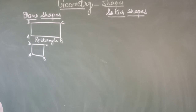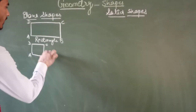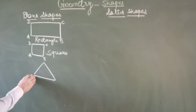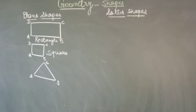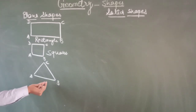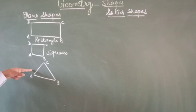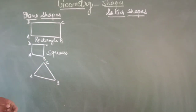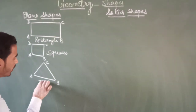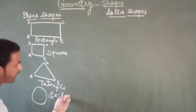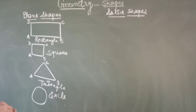Now, let's discuss the triangle. That is triangle ABC, and it can be written as triangle ABC. The sides of this triangle are AB, BC, and CA. The corners are A, B, and C. Next is circle — in a circle, there are no corners and no sides.